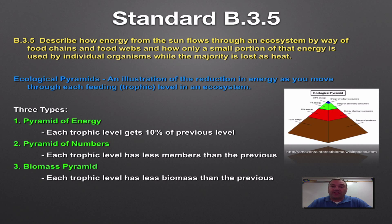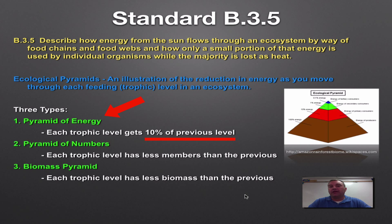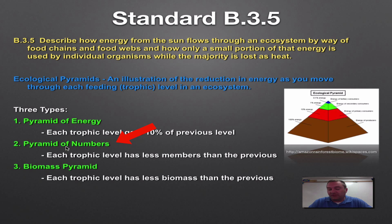Standard B3.5 deals with ecological pyramids, which look at the amount of energy or stuff available at each trophic level in a food chain or web. There are three types: the pyramid of energy — the most important — shows that only 10% of energy moves to the next trophic level, so the first trophic level has the most energy. The pyramid of numbers shows there are fewer and fewer individuals at each trophic level because there's less energy. The biomass pyramid shows there's less total biological material at each trophic level.